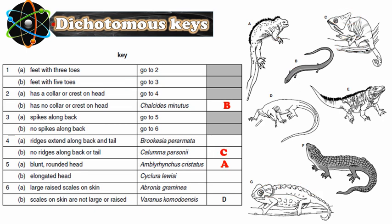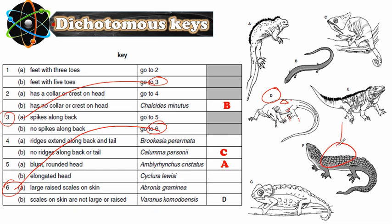Now let's go to D. Feet with three toes: one, two, three, four, five — so feet with five toes. Go to question three: spikes along back? No, it does not have spikes along the back. Go to question six: large raised scales on skin? No, the scales are not large or raised. The name of this animal is Varanus komodoensis. We write D — it is already done for us here.